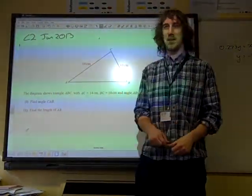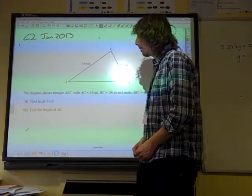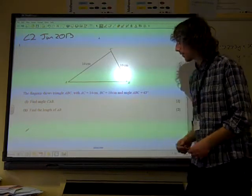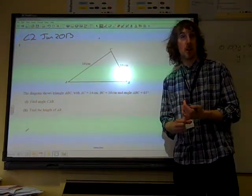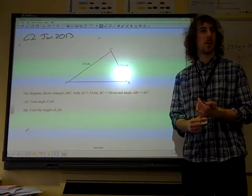Okay, January 2013, Code 2 paper, question 1. So, a nice start with some trigonometry. The triangle, we've got two sides marked and we've got an angle. If we've got two sides and an angle, what are we going to use?